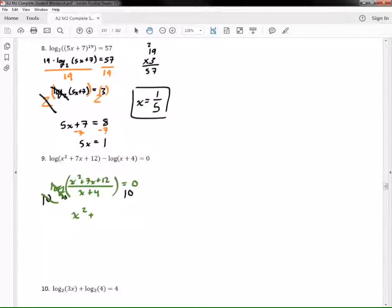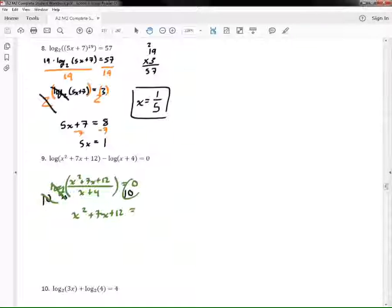All right, so what do we get now? This base 10 cancels out that log base 10, and we have x squared plus 7x plus 12 equals what is 10 raised to the zero power? Almost forgot my denominator here. 10 raised to the zero power, anything raised to the zero power is 1, always always always.